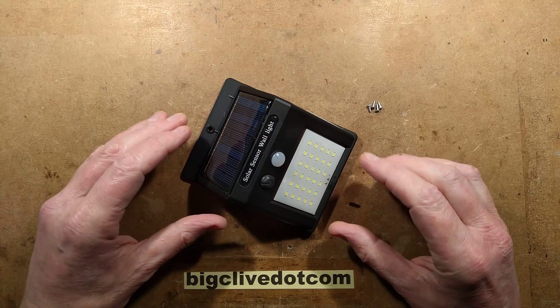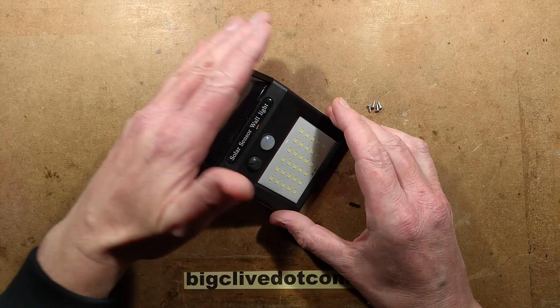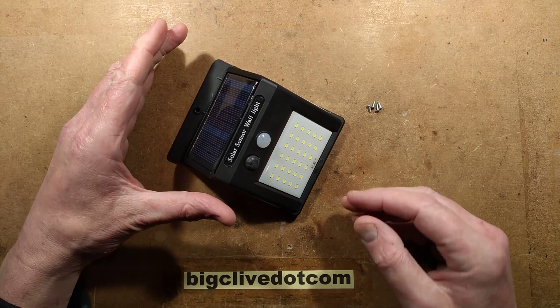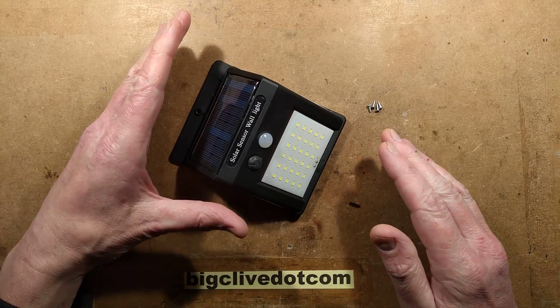The idea behind these is that when it gets dark they're supposed to turn on, and then after a while they'll turn off. When you pass it, the passive infrared will trigger them to turn on.